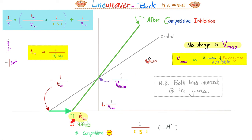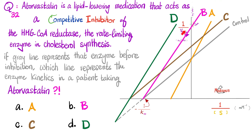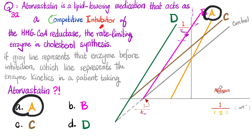So to recognize a competitive inhibitor on the Lineweaver-Burk graph: Vmax does not change (no shift on y-axis), but Km increases (x-axis intersection shifts right). Thinking about the control line — its y-axis intersection should not change after adding the inhibitor, but its x-axis intersection shifts right. This makes choice A the correct answer for atorvastatin as a competitive inhibitor.